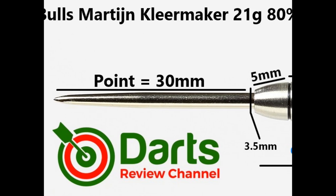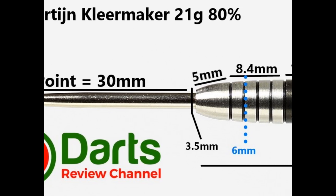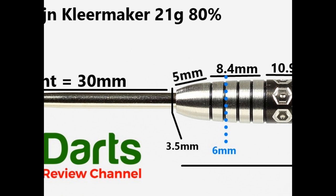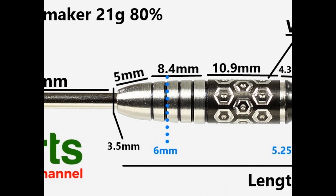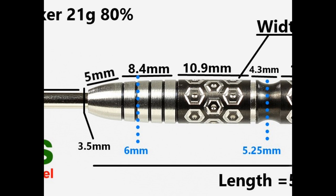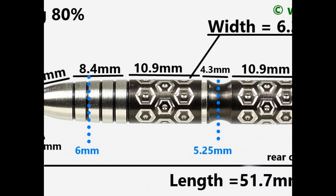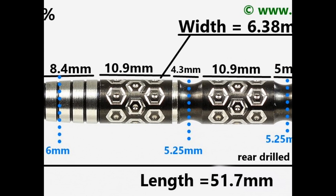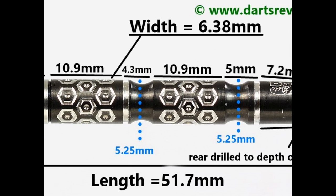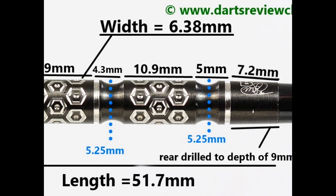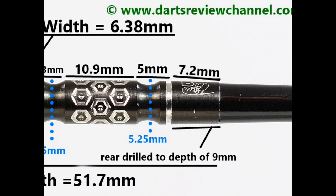The darts fitted with a silver 30 millimeter point there's a tapered nose a smooth section at the front of 5 millimeters then you've got these fine grooves painted black that's 8.4 millimeters then you've got the section of the honeycomb grip with the PVD coating that's 10.9 millimeters and then you've got the scallop and including the groove that's 4.3 millimeters another honeycomb section 10.9 millimeters and then you've got the second scallop also including the groove that's 5 millimeters a tapered smooth section on the end of 7.2 millimeters length is 51.7 millimeters and the widest part is 6.38 millimeters.